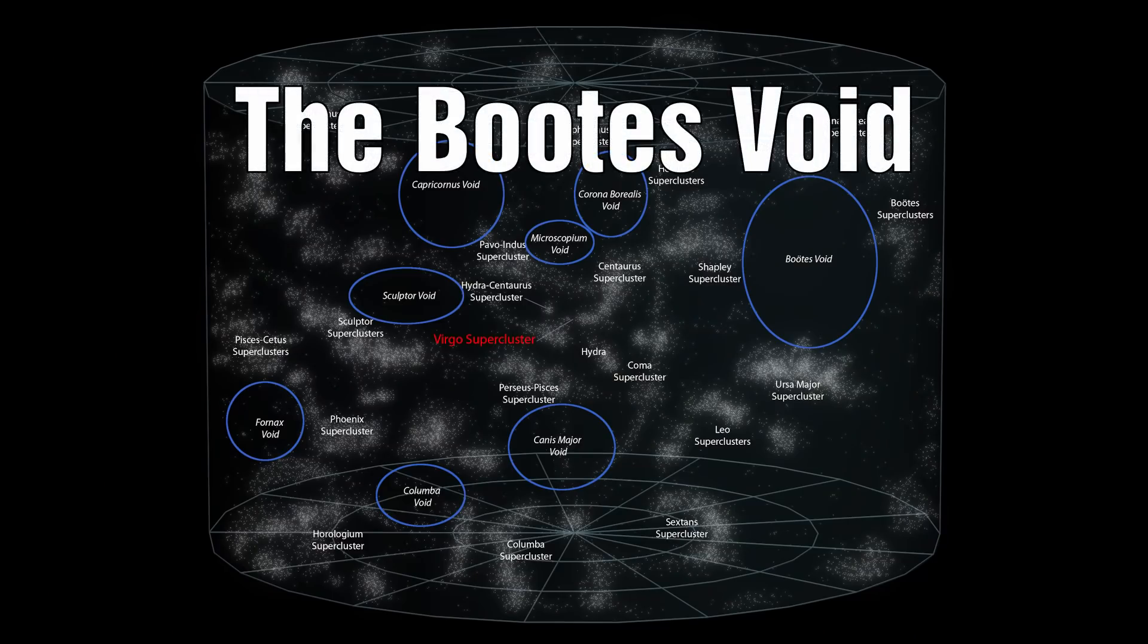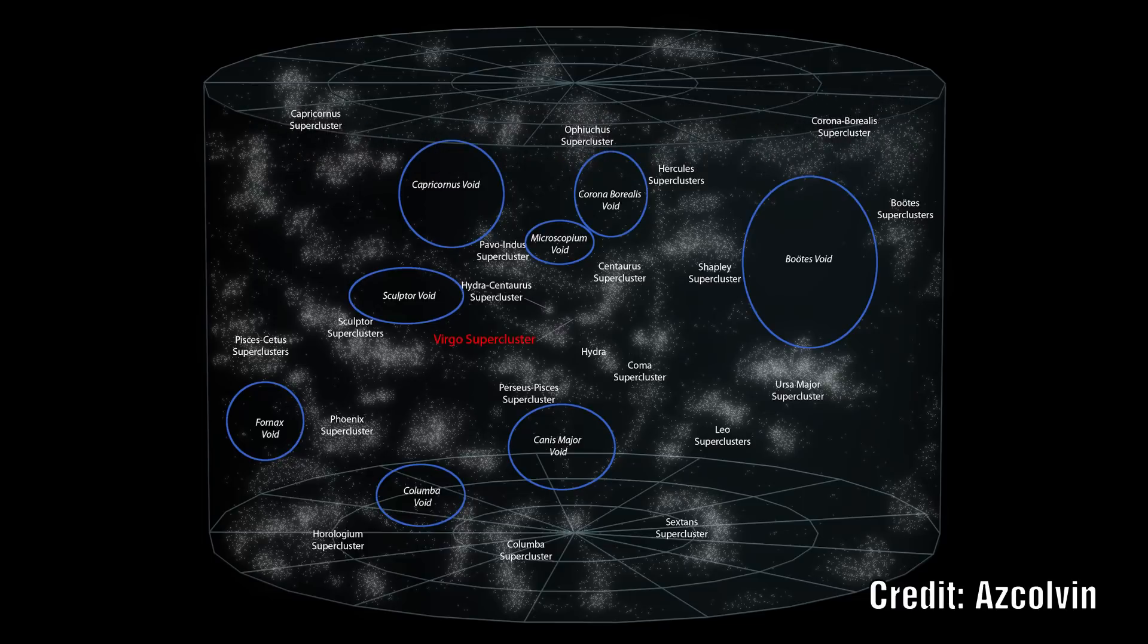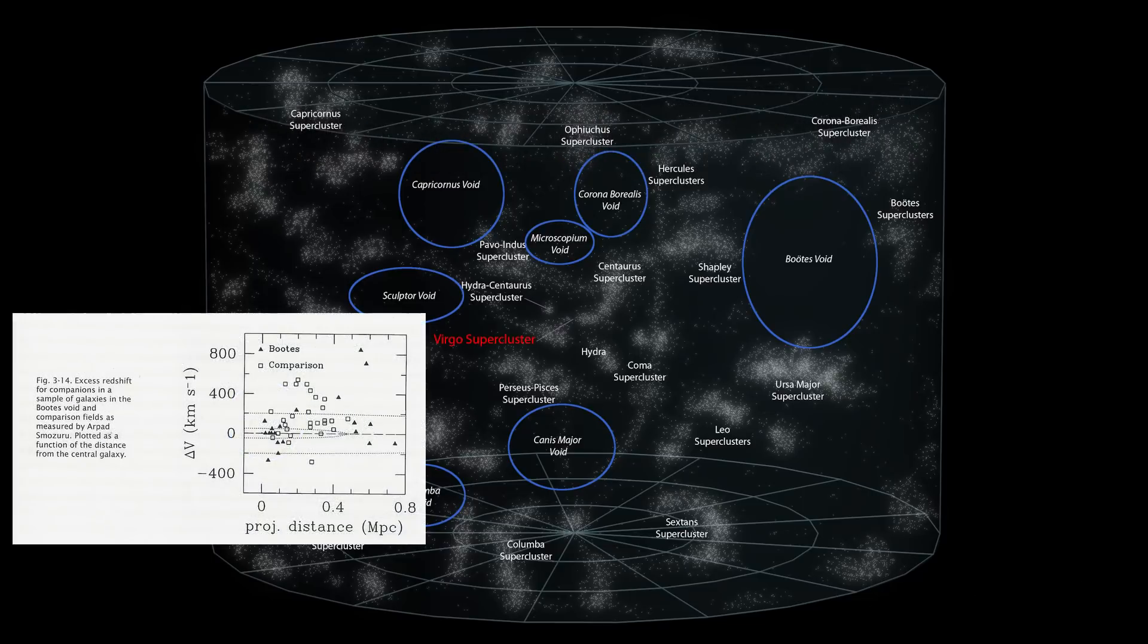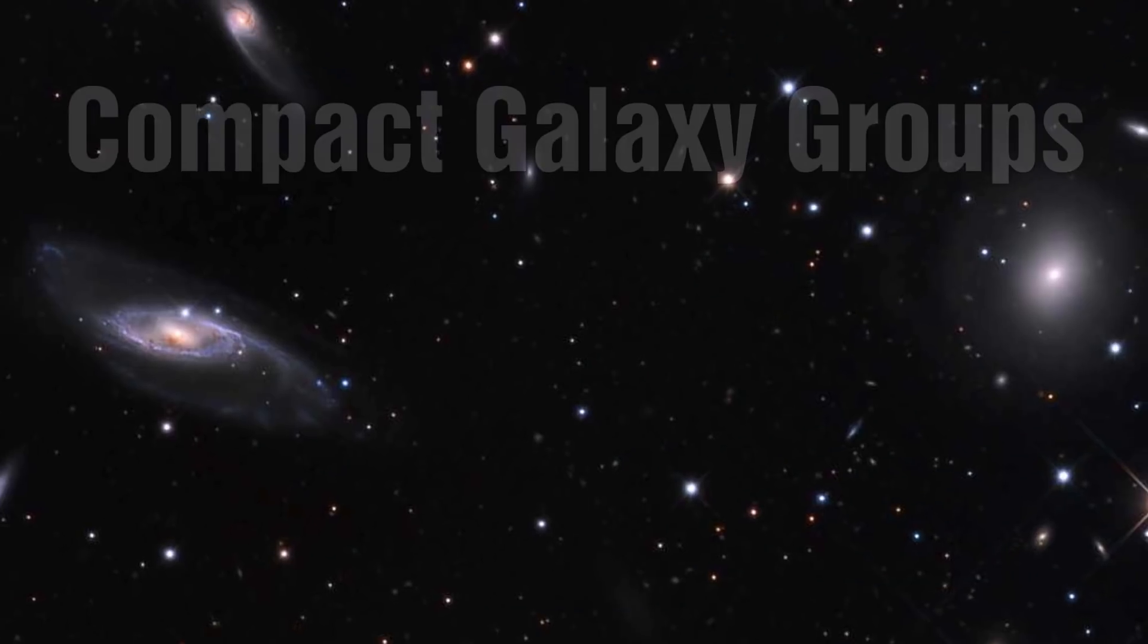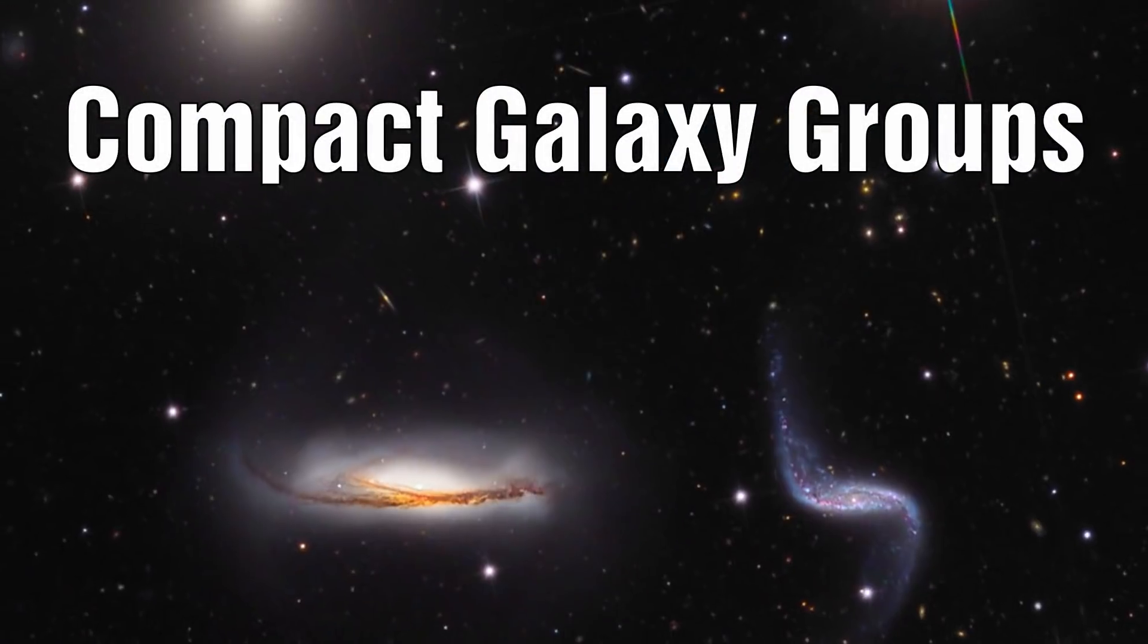The Boötes void. Here when one astronomer was studying a cluster of galaxies they found that most of the companion galaxies had a positive redshift relative to the dominant galaxy. Now let's examine compact groups of galaxies.